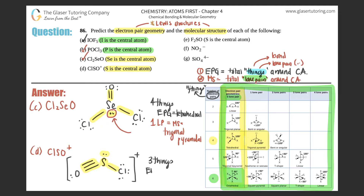Three things means the electron pair geometry is trigonal planar. Sulfur has one lone pair, so with three things and one lone pair the molecular structure is bent (or angular). The electron pair geometry and molecular structure are different for part d.